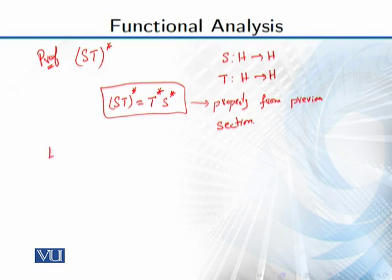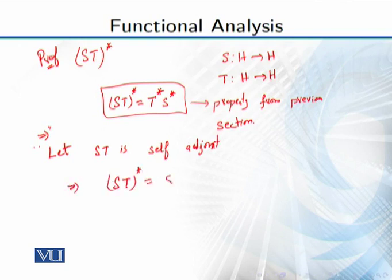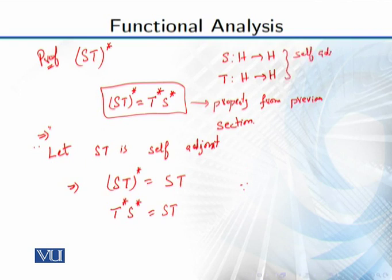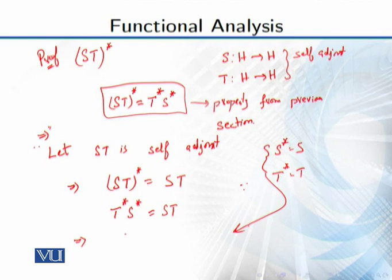Both directions: first we prove the forward direction. Let ST be self-adjoint. Self-adjoint کا مطلب کیا ہے کہ (ST)* is equal to ST. But (ST)* equals T* S*, which is the same as ST. We are given that these operators are self-adjoint, meaning S* = S and T* = T. So using this, we get TS = ST — that means the operators commute.